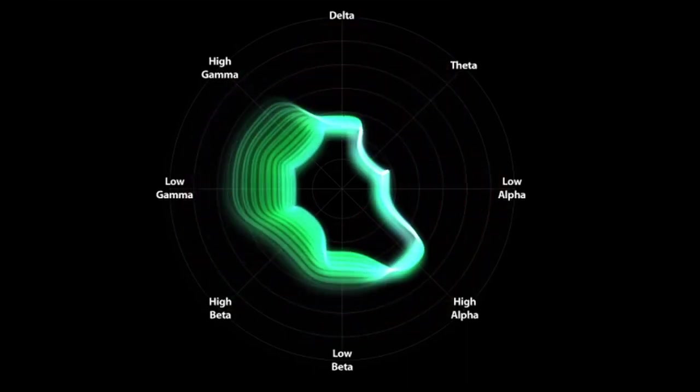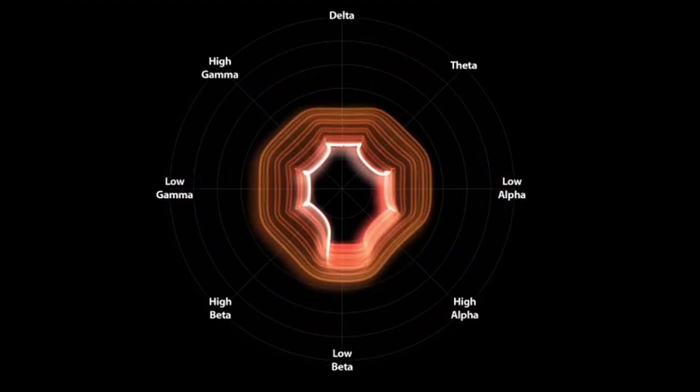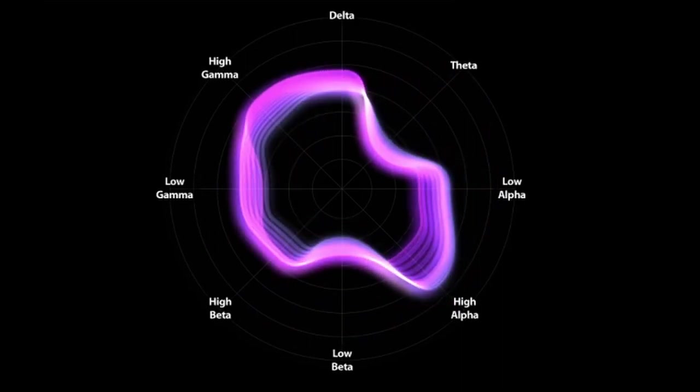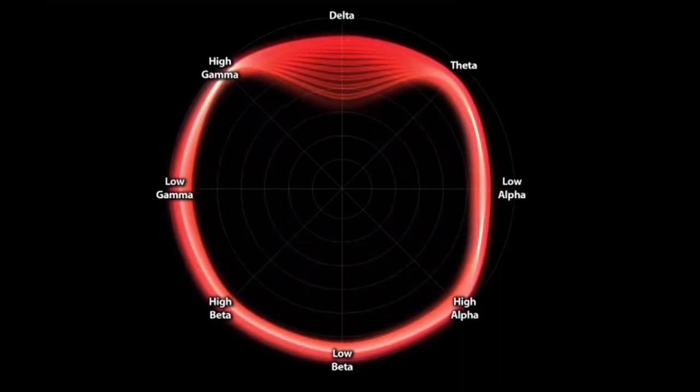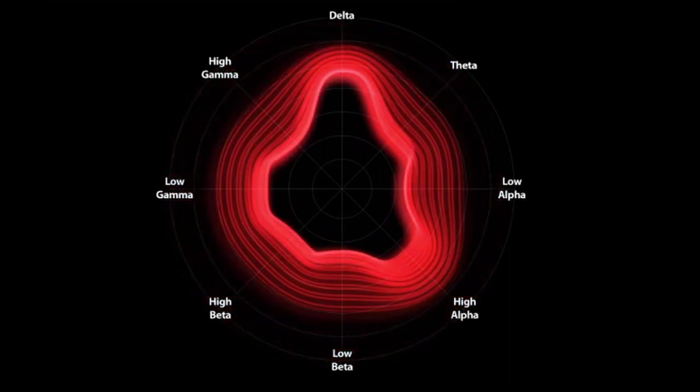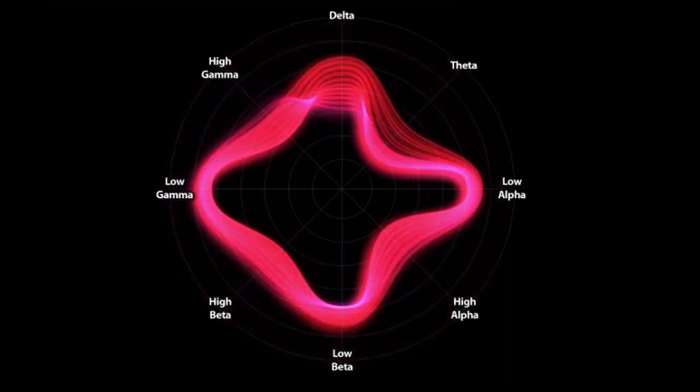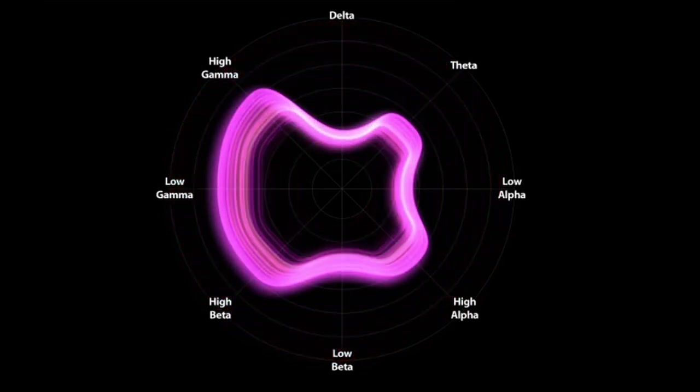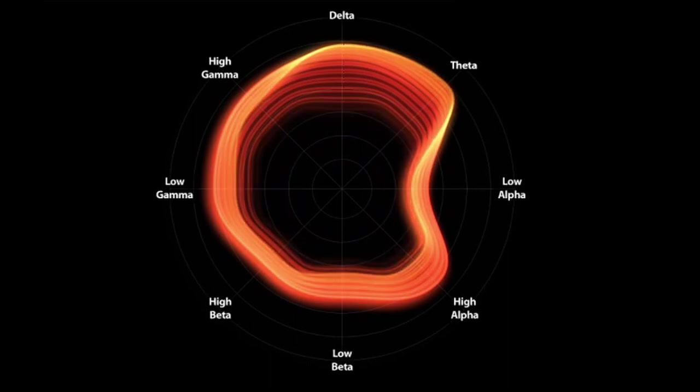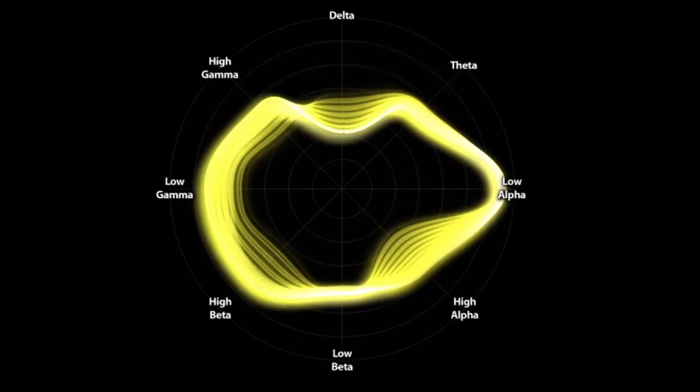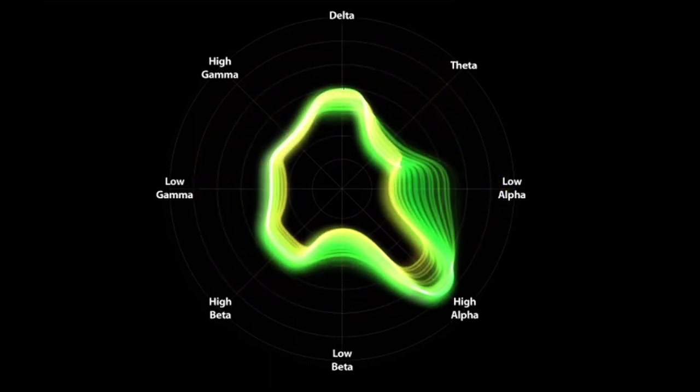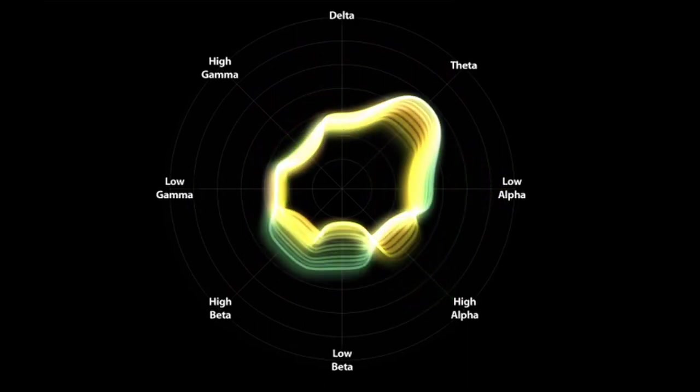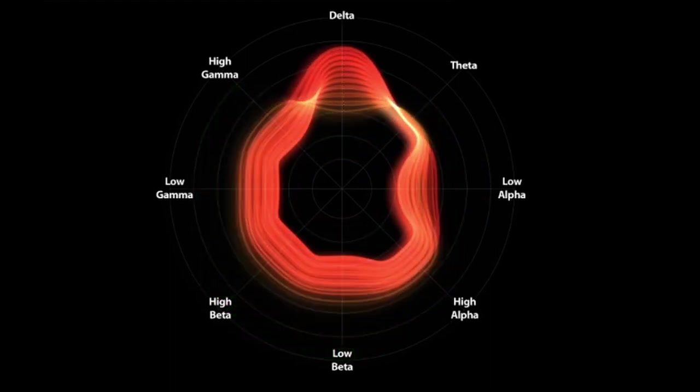Theta. Theta is about 4 to 8 hertz. It is classified as slow activity. It is seen in connection with creativity, intuition, daydreaming, and fantasizing, and as a repository for memories, emotions, and sensations. Theta waves are strong during internal focus, meditation, prayer, and spiritual awareness. It reflects the state between wakefulness and sleep, and relates to the subconscious mind.